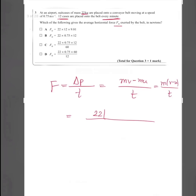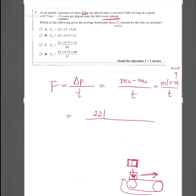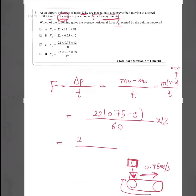We have a mass of 22 kg. The suitcase is placed onto the belt horizontally, so the initial horizontal velocity is zero (U = 0). After placement, it moves at 0.75 m/s, so the final velocity V = 0.75 m/s. We have 12 cases per 60 seconds. Therefore: F = 22 × 0.75 × (12/60). The answer is C.